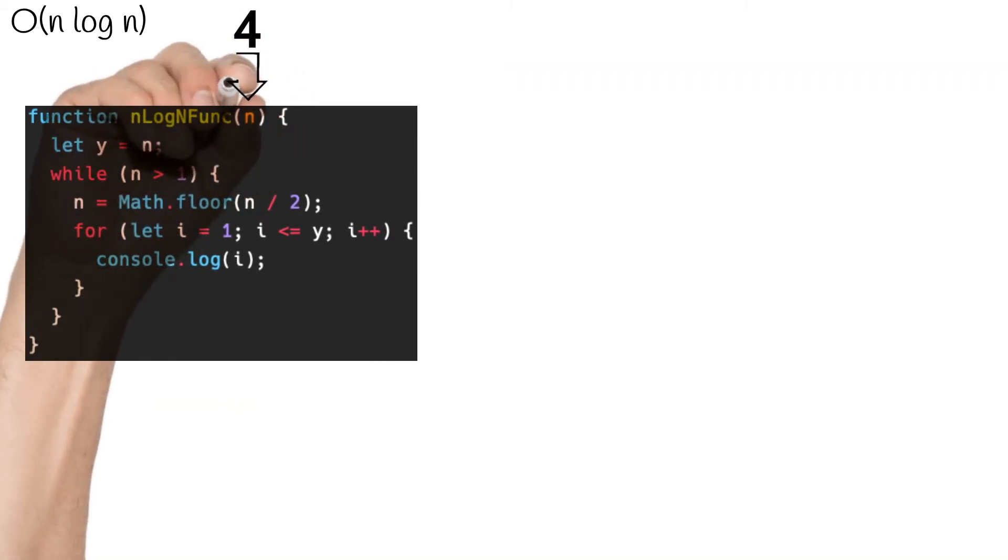We then declare another variable y, which we will set equal to n. We will get to what this variable y is for later. And at this point, we have a while loop that iterates through n until n is equal to one. For every iteration through n, this code within the while loop is run. Let's visualize this.